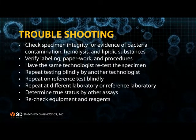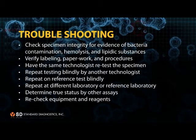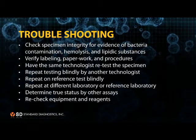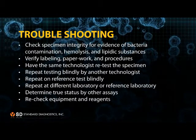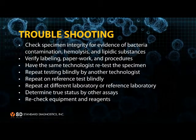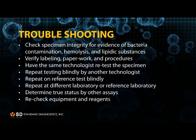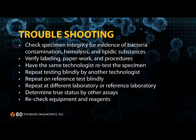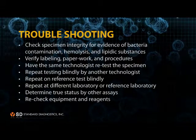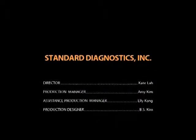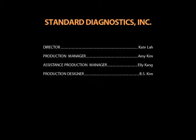When you have a problem with your test, it could be solved by the following steps: check specimen integrity for evidence of bacterial contamination, hemolysis, and lipidic substances; verify labeling, paperwork, and procedures; have the same technologist retest the specimen; repeat testing blindly by another technologist; repeat on reference test blindly; repeat at a different or reference laboratory; determine true status by other assays; and recheck equipment and reagents.